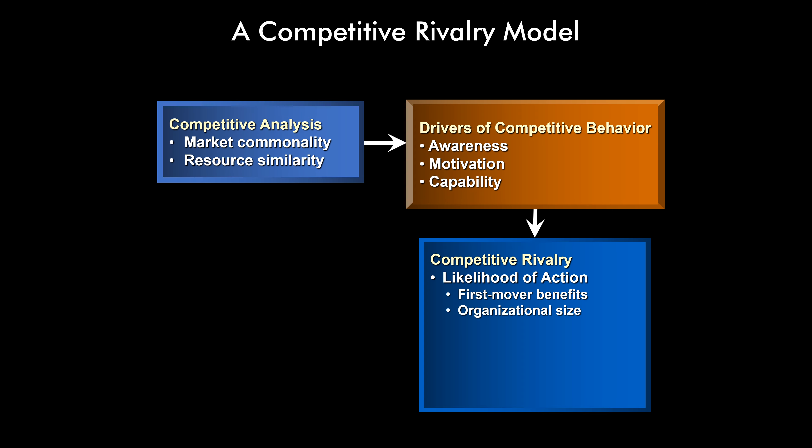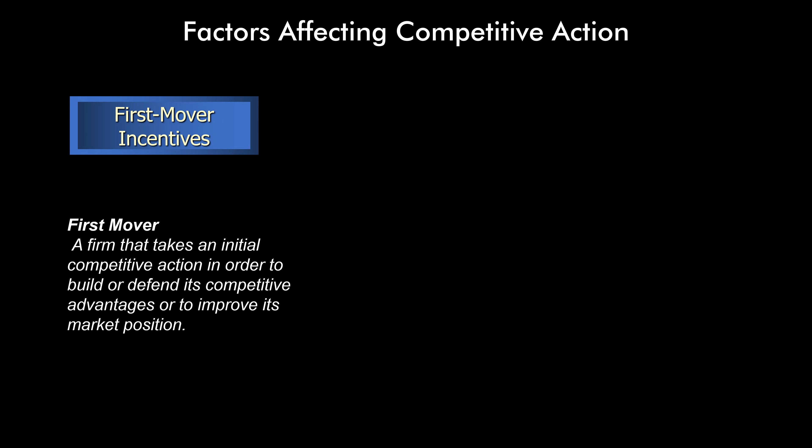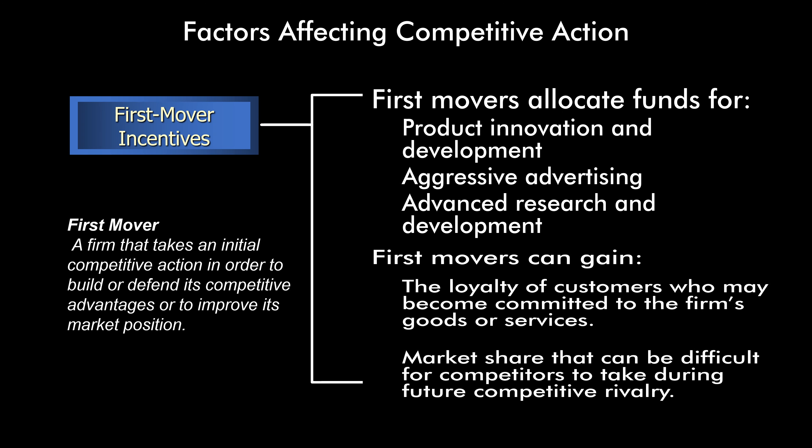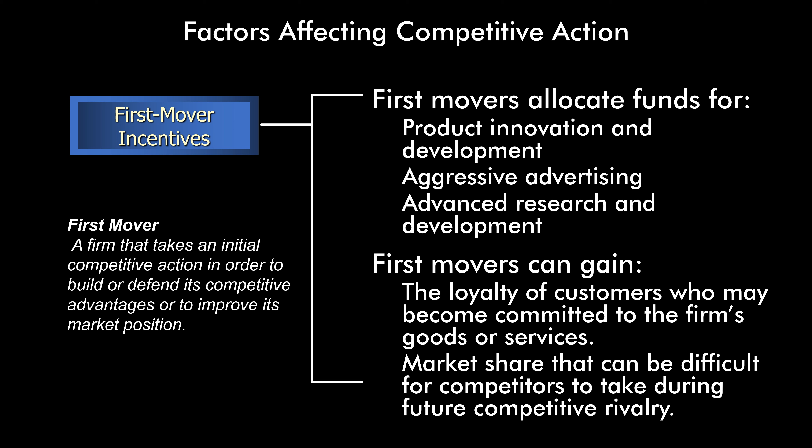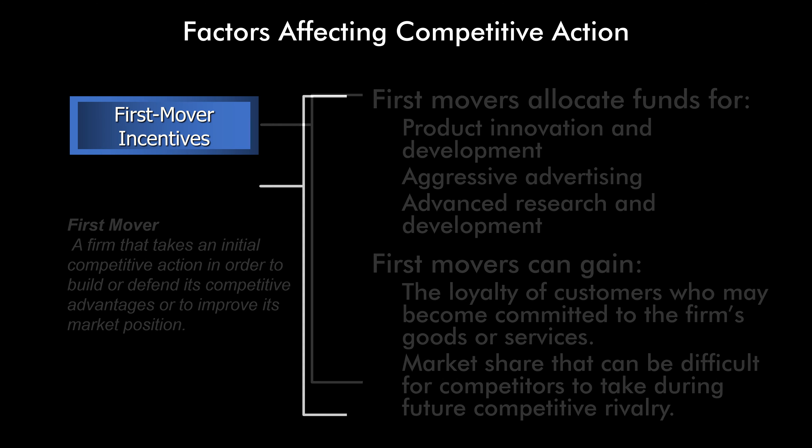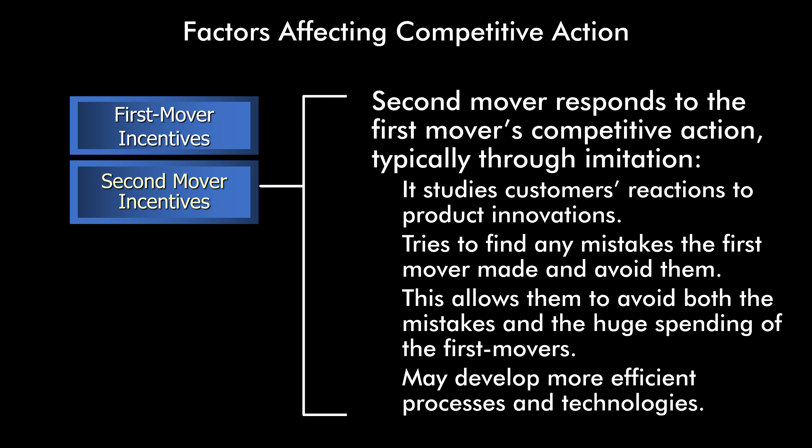Next, we turn to the likelihood of action. A first mover is a firm that takes an initial competitive action in order to build or defend its competitive advantage or to improve its market position. First movers allocate funds for product innovation and development, aggressive advertising, and advanced R&D. First movers can gain the loyalty of customers who may become committed to the firm's goods or services, and market share that can be difficult for competitors to take away during future competitive rivalry. A second mover responds to the first mover's competitive action, typically through imitation. It studies customers' reactions to the product's innovations and tries to find any mistakes the first mover made and avoid them, allowing them to avoid both those mistakes and the huge R&D expense of being a first mover. They may also develop more efficient processes and technology as a result.